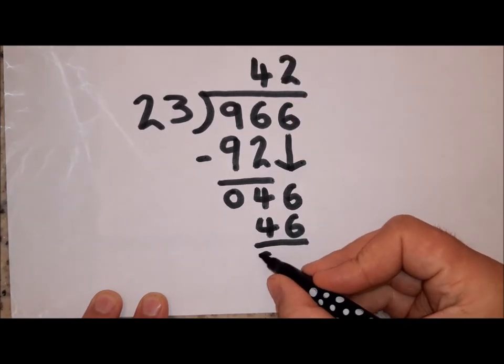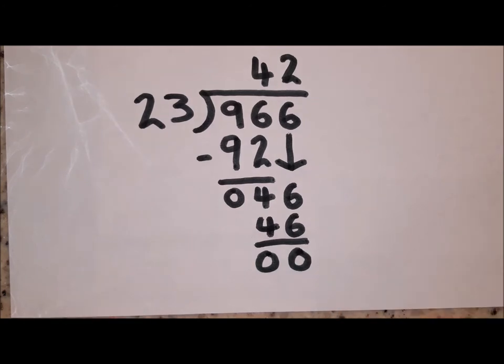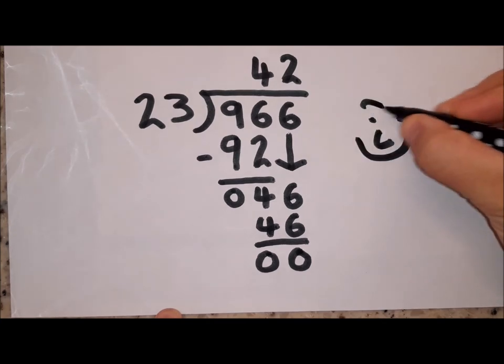And let's see if I've got anything else I need to divide. 46 take away those 46 leaves me with nothing. And that is my answer. 966 divided by 23 is 42.